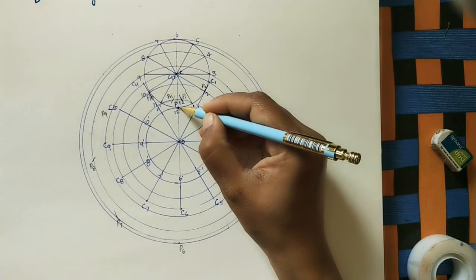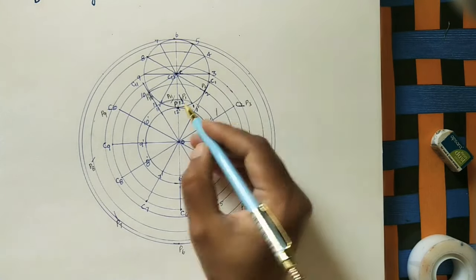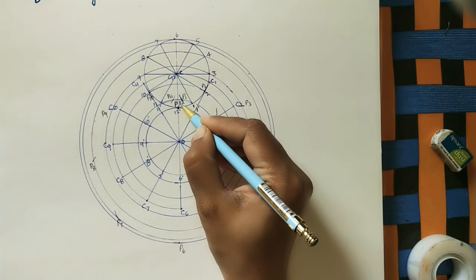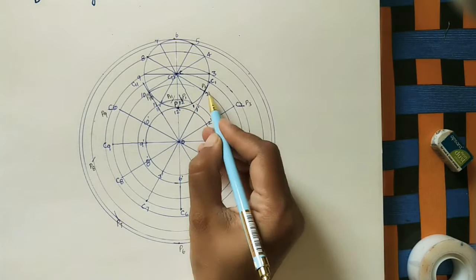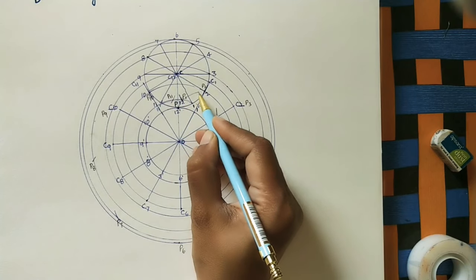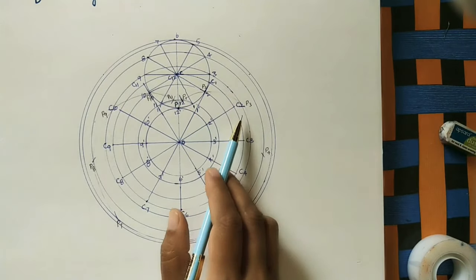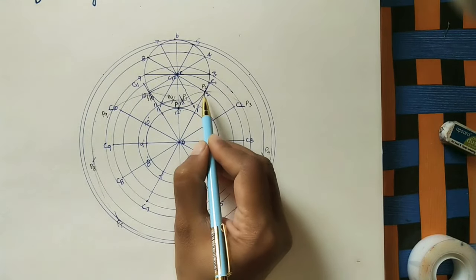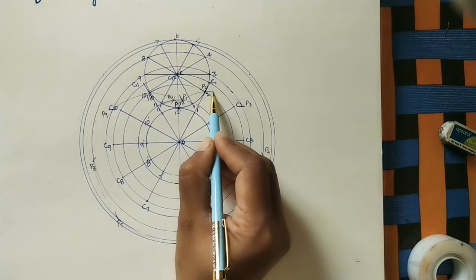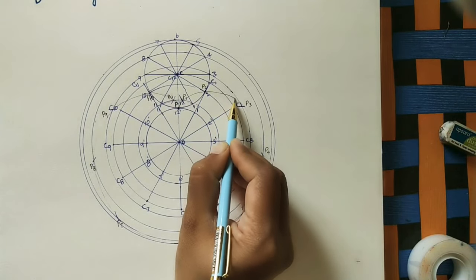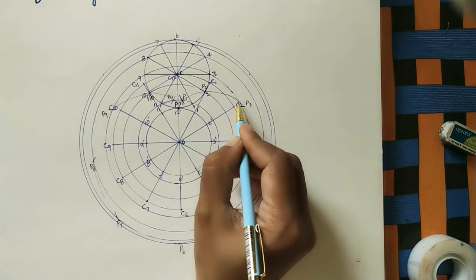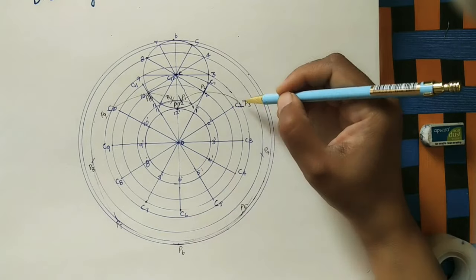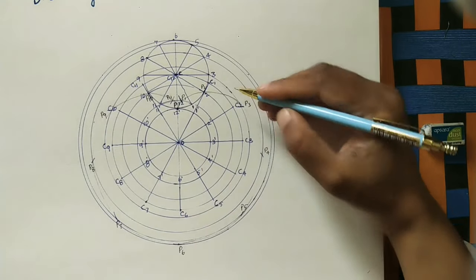Join all the P points with a smooth freehand curve: from P to P1, P1 to P2, P2 to P3, P3 to P4, and so on through all points.